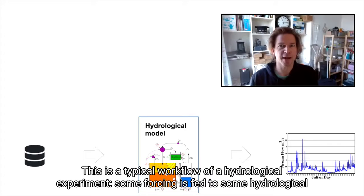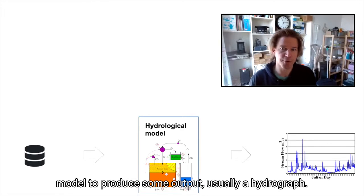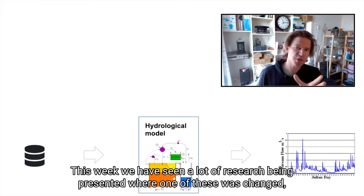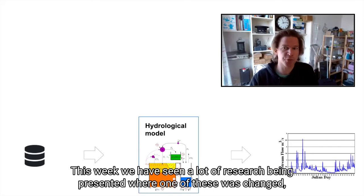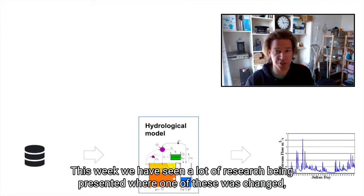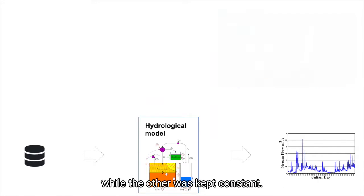This is a typical workflow of a hydrological experiment. Some forcing is fed to some hydrological model to produce some output, usually a hydrograph. This week we have seen a lot of research being presented where one of these was changed while the other was kept constant.